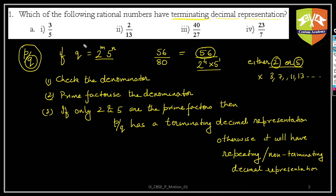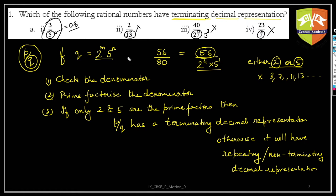Let's check the options. The first option has only 5 in the denominator — either 2, 5, or both are fine — so it clearly gives a terminating decimal. For the others: 13 is prime and is not 2 or 5; 27 is 3^3; and another option has 7. These are all ruled out. Only the first option works, and you can verify it equals 0.8.